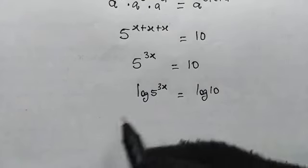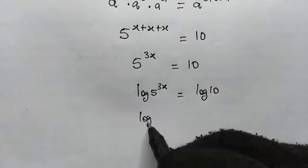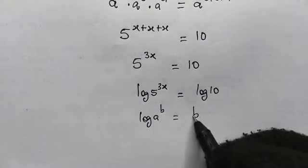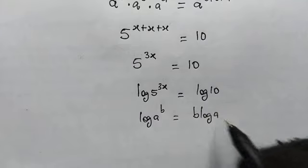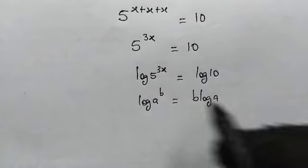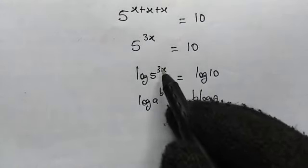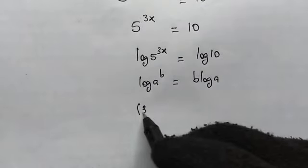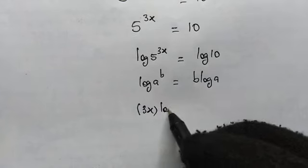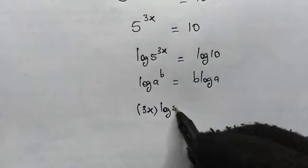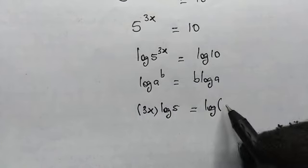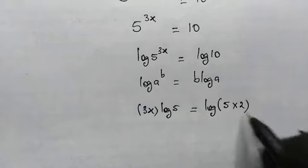We know this property of logarithm: log of a to the power of b is equal to b multiplied by the log of a. So this power 3x comes down, and we get 3x multiplied by log of 5. This will be equal to log of 10, which is the same as log of 5 times 2.